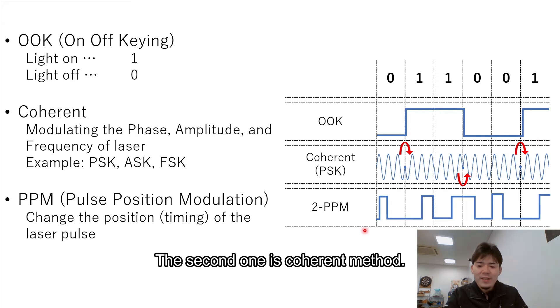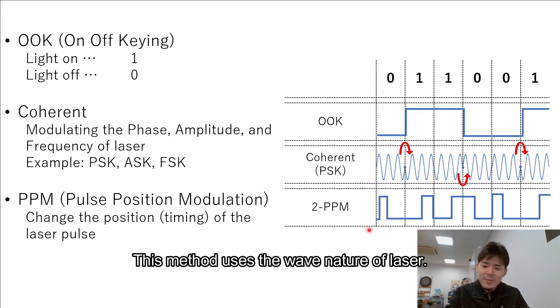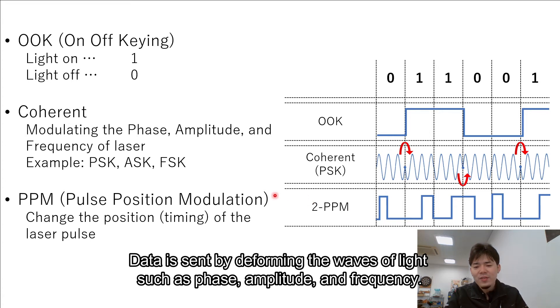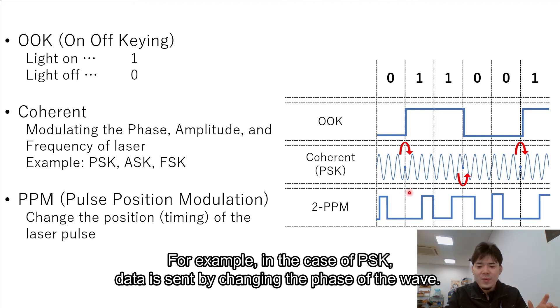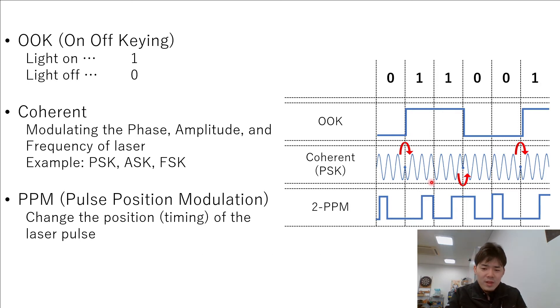The second one is Coherent method. This method uses the wave nature of the laser. Data is sent by deforming the waves of light, such as phase, amplitude, and frequency of the laser. For example, in this case of PSK, data is sent by changing the phase of the wave.